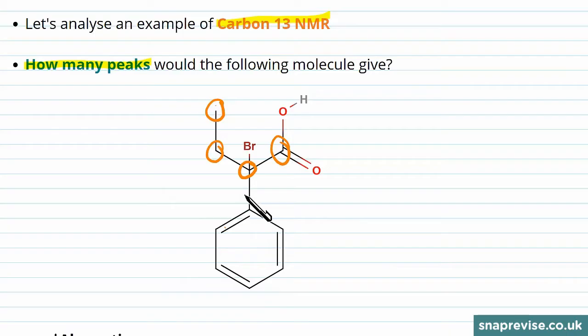So we can label all of these carbons starting here with one, two, three, four, five. Both of these are in environment number six. Both of these are in environment number seven, and this final one is in environment number eight. So we would expect to see eight peaks on an NMR spectra.